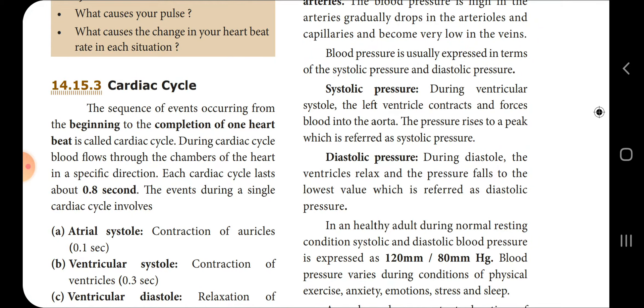What are the types of granulocytes? They are neutrophil, eosinophil, and basophil. The function of RBC is to transport oxygen from the lungs to tissues and to transport carbon dioxide from the tissues to the lungs.